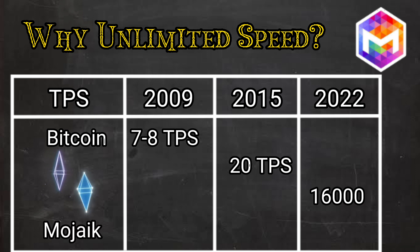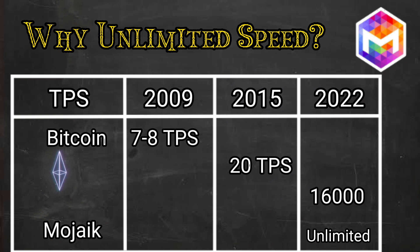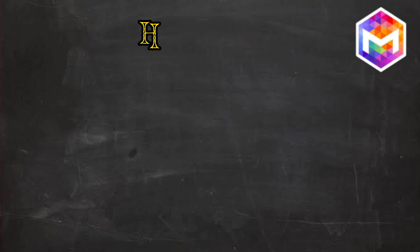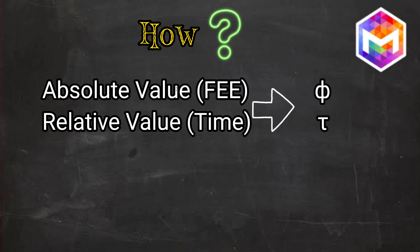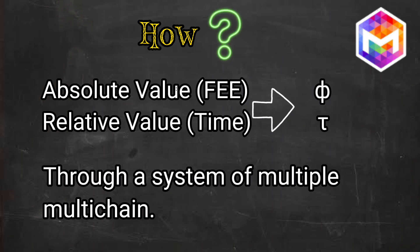Therefore, Mojak aims to introduce a platform which is free from the restrictions of the speed limit. The question arises: how will Mojak achieve unlimited speed? The answer is through the absolute value of phi and the relative value of time. Mojak has introduced a system in which multiple multi-chains can work perfectly.